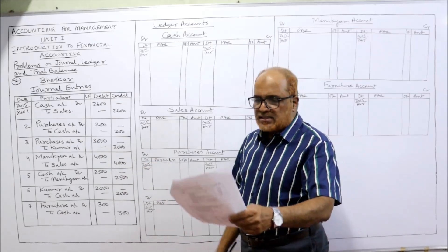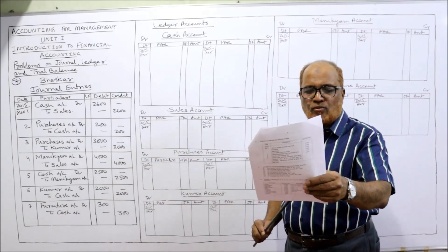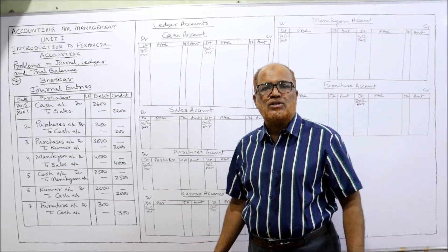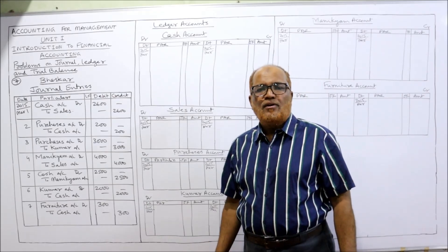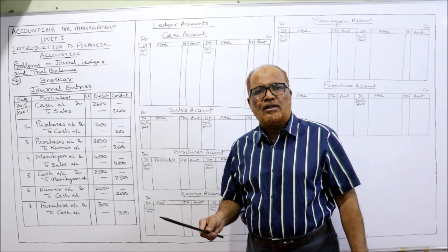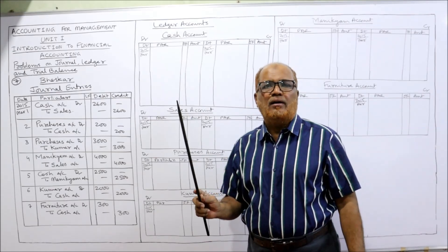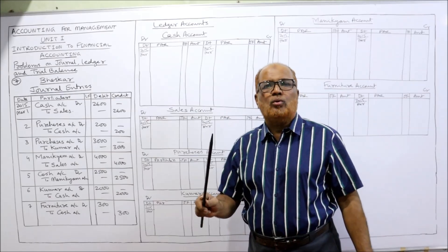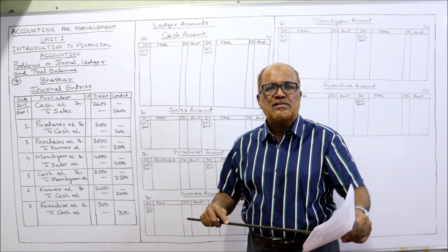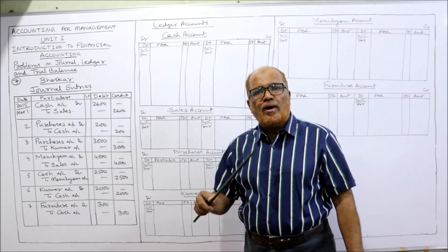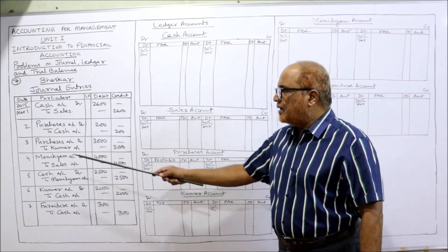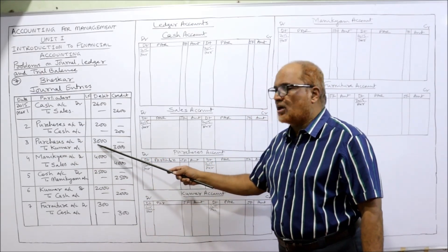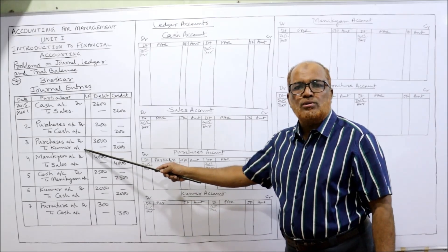Third transaction — purchase of goods on credit from Kumar. This is a credit purchase. Whether cash purchase or credit purchase, purchases account should be debited. In this case, Kumar should be credited. Entry: Purchases account Dr. to Kumar account — 3000, being the goods purchased on credit.